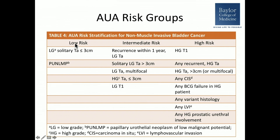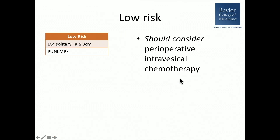In terms of low risk, there are very few patients that fall into this group — usually solitary low-grade TAs less than three centimeters, or the entity of low malignant potential (PUN-LMP). Intermediate risk includes recurrences of low-grade disease, low-grade disease greater than three centimeters, multifocal low-grade disease, and small high-grade TAs. Low-grade T1 is also placed in this group. High risk includes all others with high-grade disease.